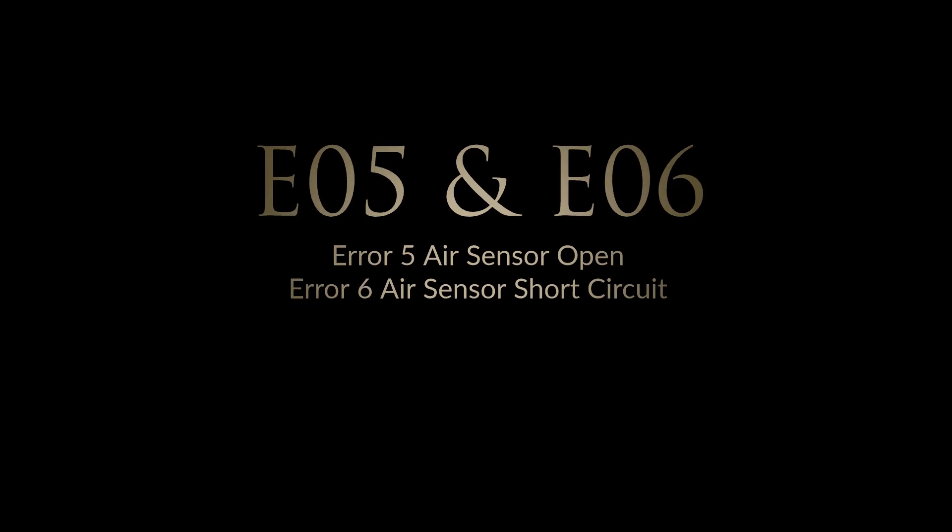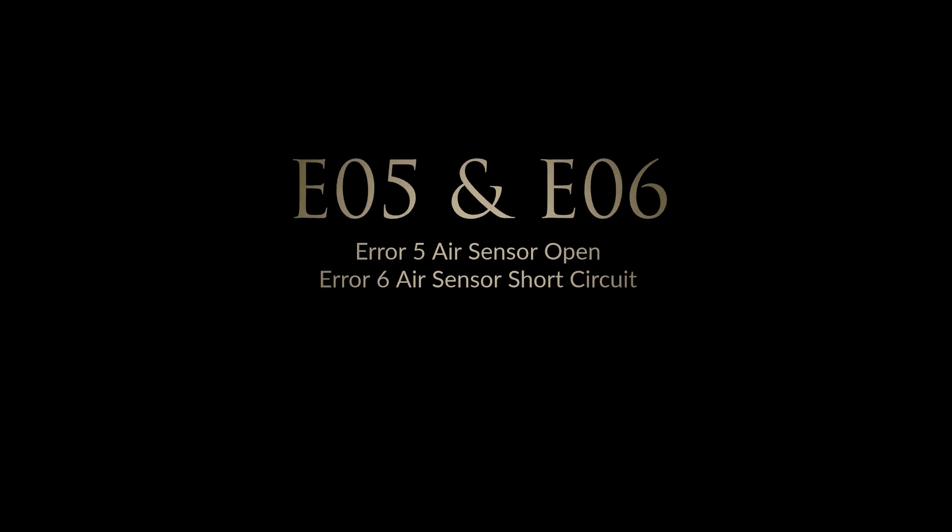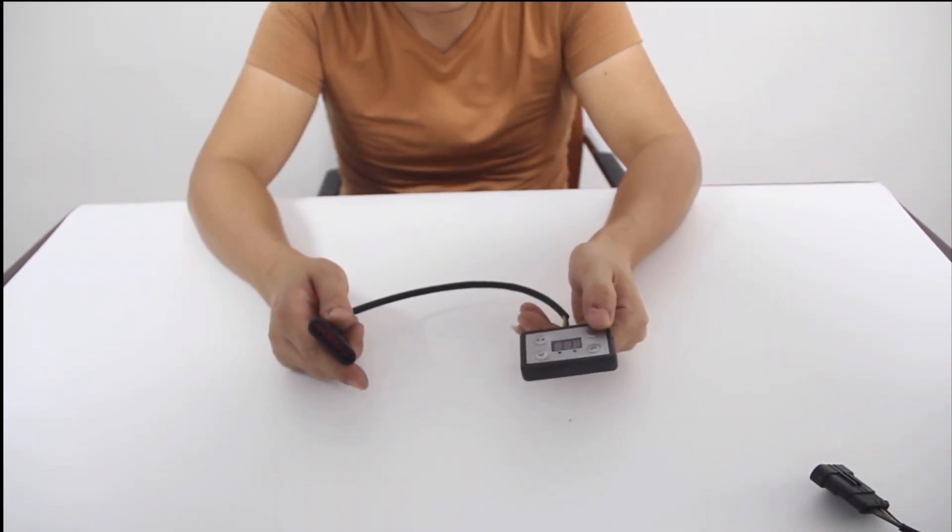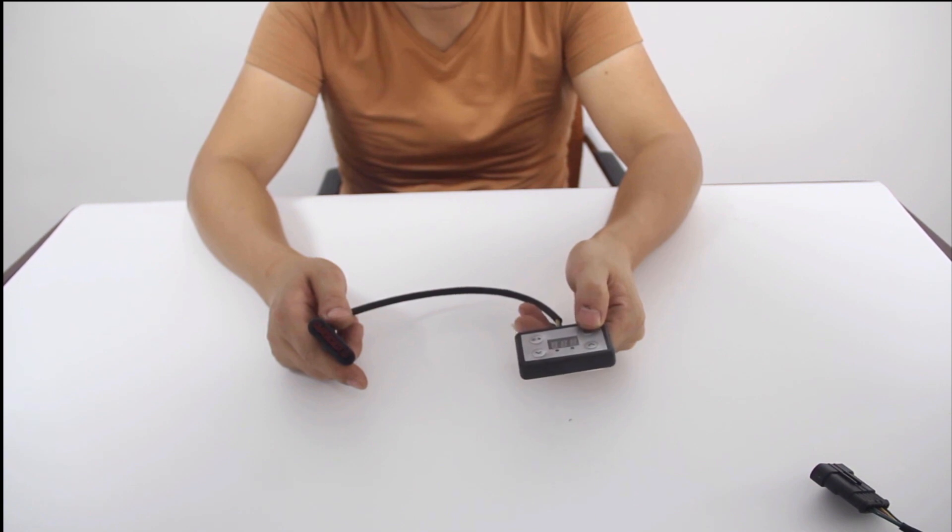Error code 5 and 6, error 5 error sensor open, error 6 error sensor short circuit. To address errors 5 and 6, simply inspect the control panel to verify its proper functionality and confirm that it is free from any damage or malfunctions.